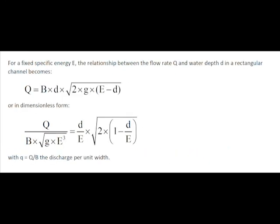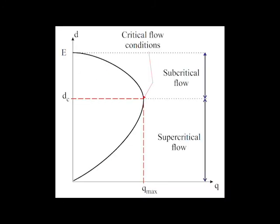For a fixed specific energy E, the relationship between the flow rate and the water depth is shown. That relationship has a maximum unit discharge and two situations of zero discharge when the water depth is equal to E or equal to zero.